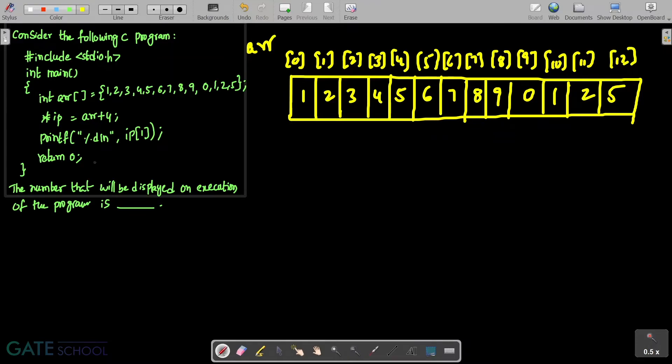Now, star IP equals array plus 4. We are considering IP as a pointer variable which is holding the array plus 4 location. Array represents the very first memory location, and array plus 4 will be representing this memory location. Array is representing the base address itself. Plus 4 means it is representing this memory location.